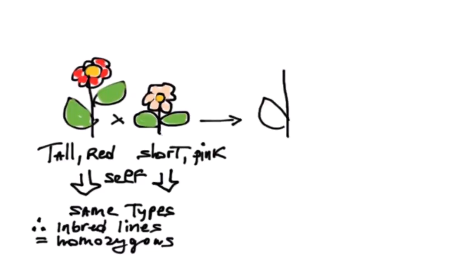If we cross these two lines, the resulting F1 is tall and red, indicating that the dominant traits are tall and red and the recessive traits are short and pink.